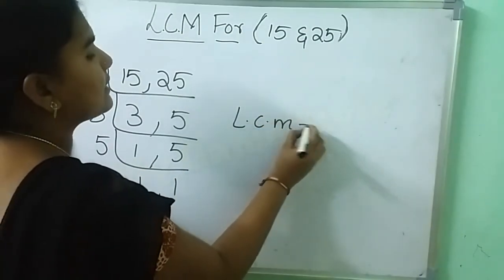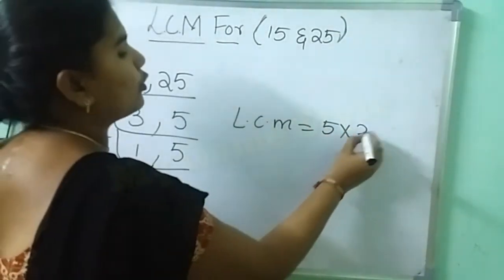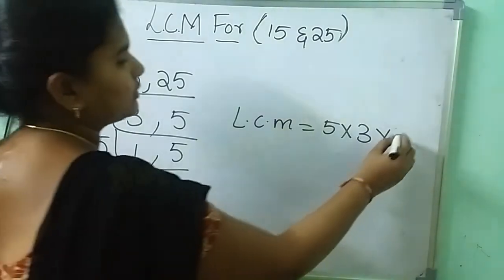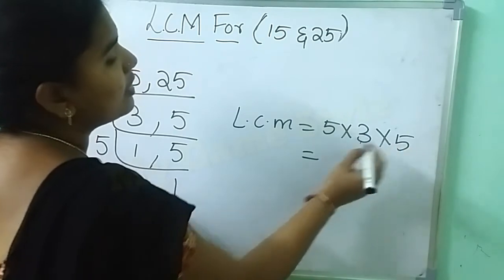Here, LCM is equals to 5 into 3 into 5. How much? 5 times 3 is 15. 15 times 5 is 75.